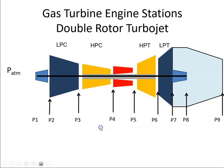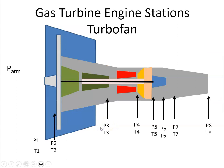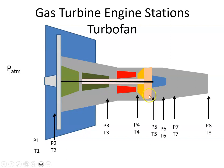Or we could have a turbofan engine. We have P2 at the inlet to the fan, P3 at the outlet of the compressor, P4 at the inlet to the turbine, P5 at the outlet of the turbine, P8 at the exhaust, and then a pressure here — maybe P9 in the...